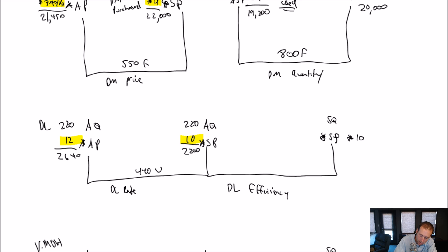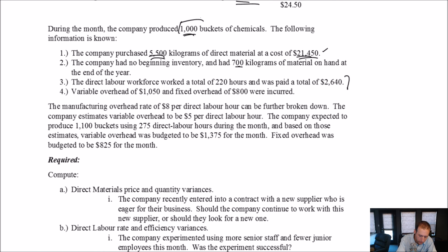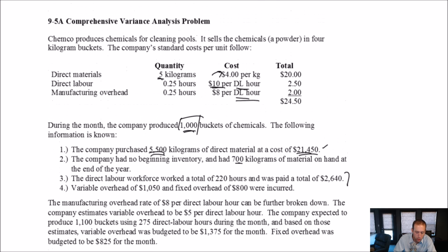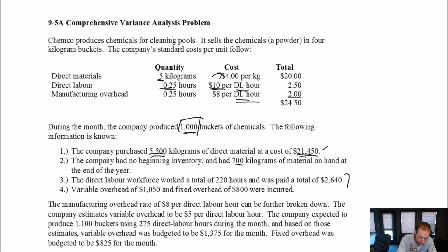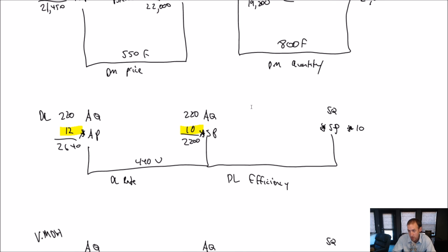The final prong here, the SP remains the same. The SP remains $10. The standard quantity, I say to myself, given the fact that I made 1,000 units, right? That's what I made, 1,000, scroll up, 1,000 buckets of chemicals. That's what I actually made. Given that fact that I made 1,000 buckets of chemicals, how many hours should it have taken? And here we have it. It's supposed to take 0.25 hours. So, if I make 1,000 buckets and each bucket should take 15 minutes, 0.25 hours, 1,000 times 0.25, I should have taken 250 hours.